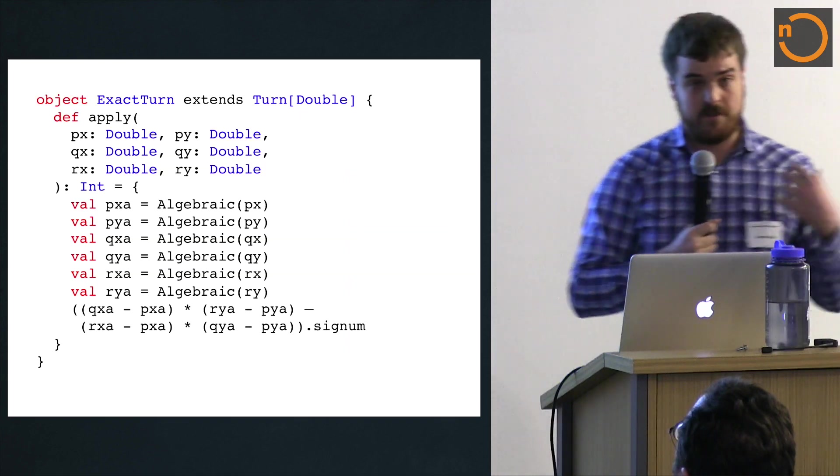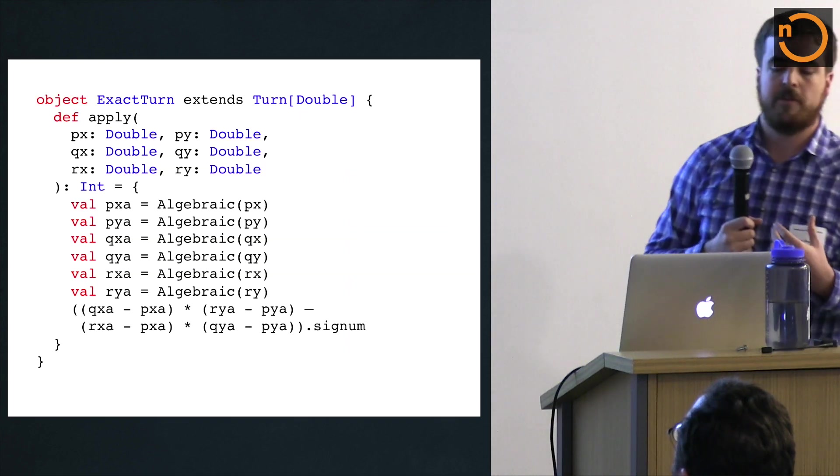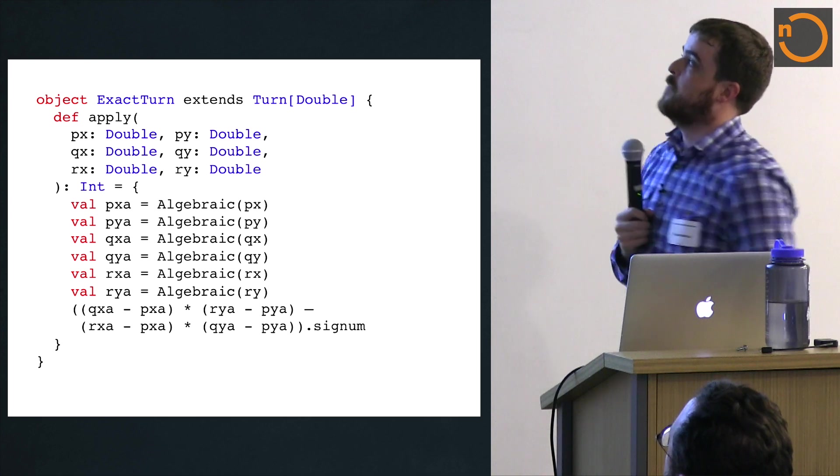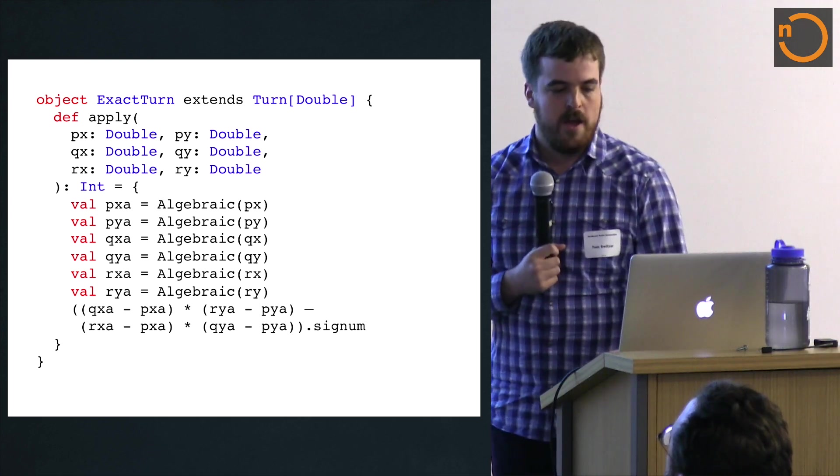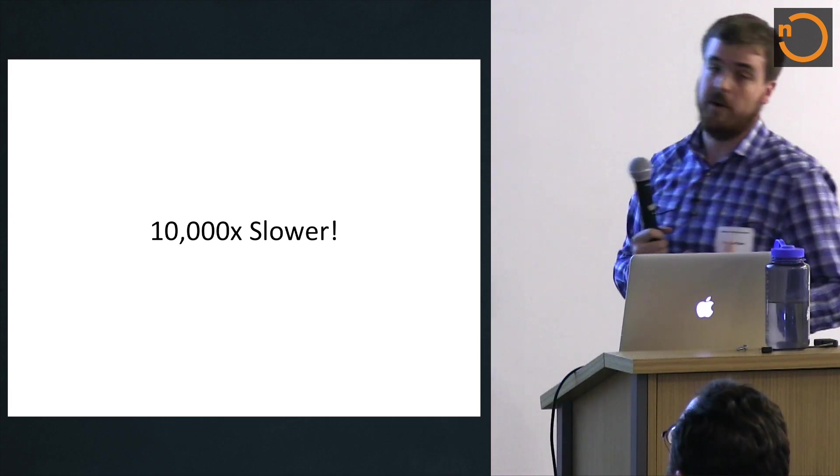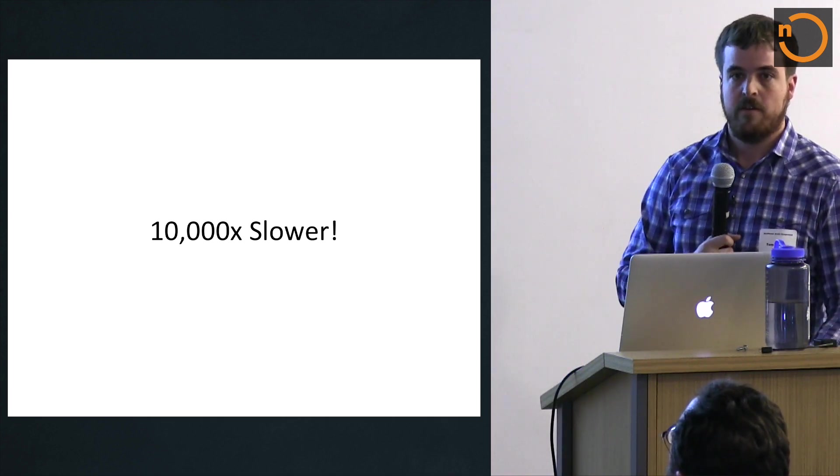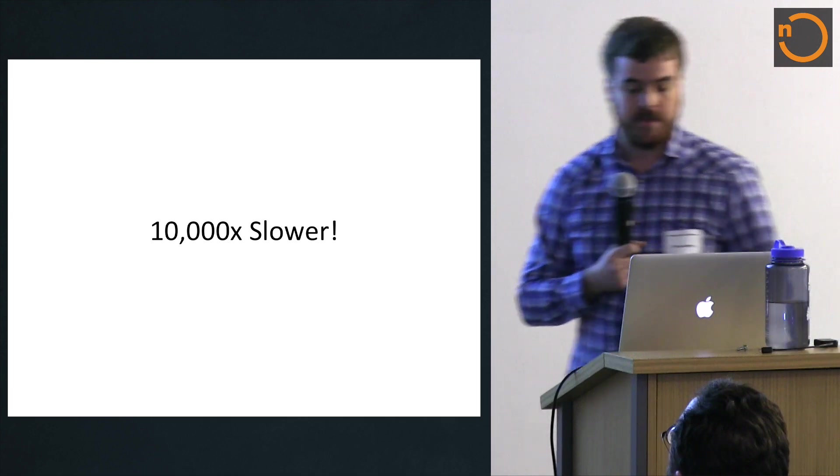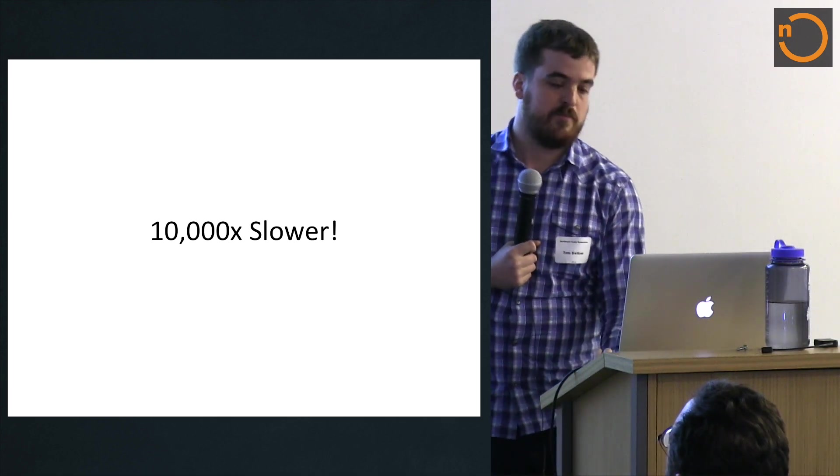So if we wanted to implement this using just exact arithmetic, no floating point filters, you would probably just do this. We would wrap the doubles in some exact type, like algebraic, we compute the sign, and of course the problem is this is very slow. I mean, it's a lot slower. It's really hard to beat floating point arithmetic, or just like pure doubles, primitive types.